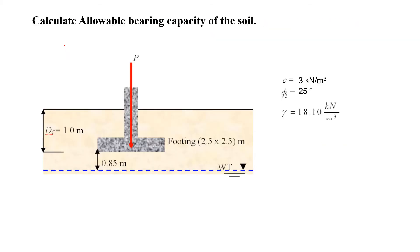Now I will show with an example: calculate the allowable bearing capacity of the soil. The given parameters are: depth of foundation = 1 meter, ground water table is at 0.85 m below the foundation, footing dimension is 2.5 m × 2.5 m (square footing), cohesion c = 3 kN/m², friction angle phi = 25 degrees (meaning the soil is a mixture of clay and sand), and unit weight gamma = 18.1 kN/m³.